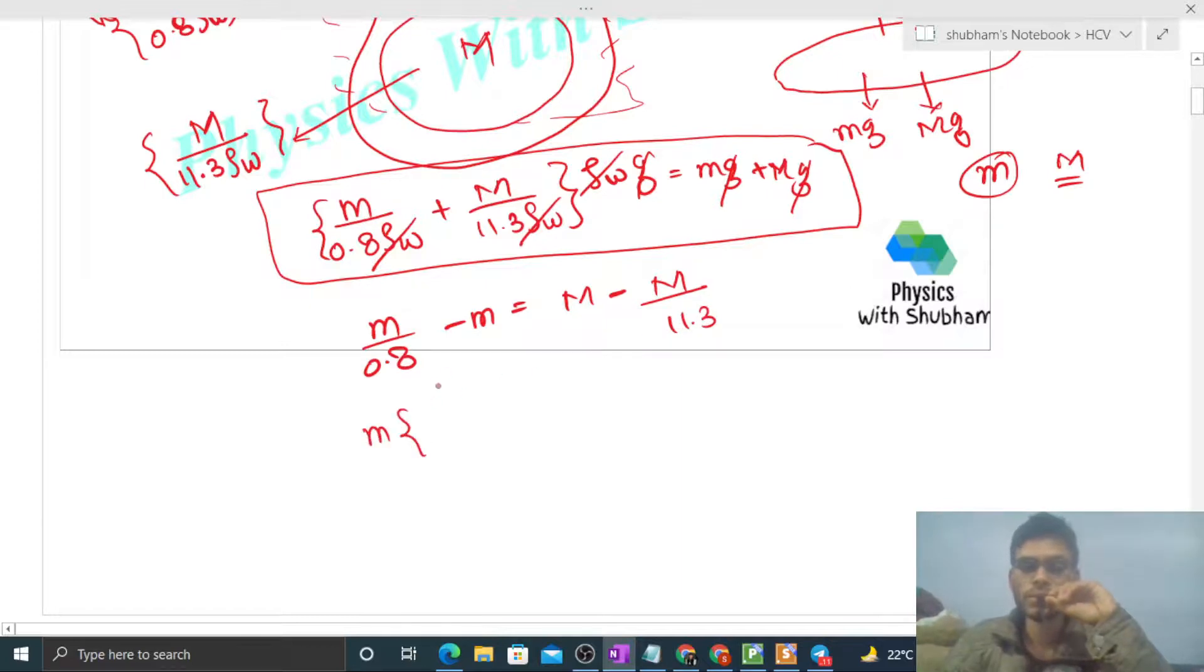So small m yahan se common na jayega: (1 - 0.8)/0.8. That should be equal to capital M times (11.3 - 1)/11.3.